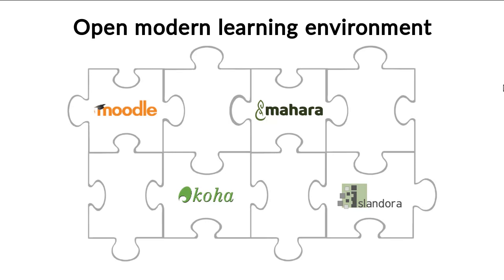As you can see from the puzzle slide, we've put some logos up there that you might have already heard about, but of course there are many pieces still empty — that is just to indicate that you will have other systems that are part of your learning environment. Our pre-session survey showed that a lot of you already integrate with other systems, and those would be filling those puzzle pieces, because everything together brings that big picture of a learning environment. There is no single application these days that can deliver everything you'd like to do.